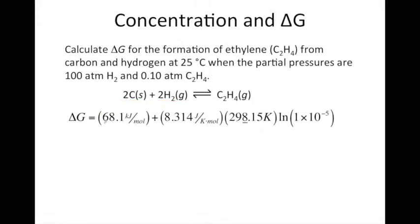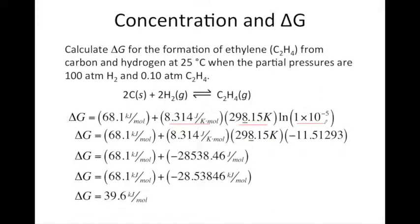Now we can plug that into our equation along with the R, T, and the natural log of Q, and we can solve. Now be careful to watch your units. We have kilojoules over here. We have joules over here. So we want to be sure we get everything in the right units, the same units. And if we solve this, ultimately we should get a delta G value for this reaction, which is 39.6 kilojoules per mole.